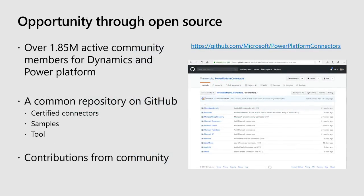We have realized the importance of engaging the community and maintaining the connectors we have. There have been a lot of questions about how people can build custom connectors, feedback on out-of-the-box connectors, requests for new connectors, and feature requests for existing ones. So we started open sourcing connectors on GitHub. We have source code for the certified connectors, a bunch of samples you can look at, and we also open sourced the tooling.